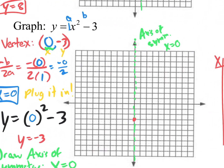From the vertex, go 1 over 1 up and put a dot. Back to vertex, 2 over 4 up — put a dot. Back to vertex, 3 over 9 up — put a dot. Then map all three dots over to the other side. We are done — we found and graphed that parabola without even using an input-output table. All we did was use the pattern 1, 1 — 2, 4 — 3, 9. The input-output table takes way longer and has more opportunities for mistakes.